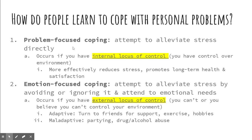Internal locus of control is problem-focused coping — it means you feel in control of your own life. When you see a problem, you think, 'This is a problem, but I have the power to fix this. I'm going to think through what I need to do.' External locus of control is more emotional coping — thinking 'I don't know how to fix anything, so I'm going to avoid problems.' You'll try to get someone else to do something, look toward things like drugs and alcohol to cope. External locus of control says it's not in my control, so I'll place it on someone else. These are cognitive processes.